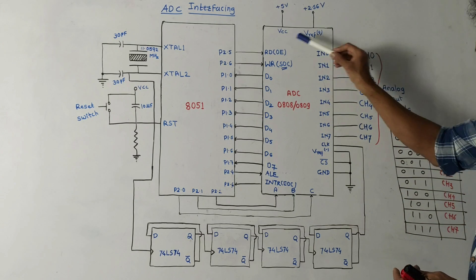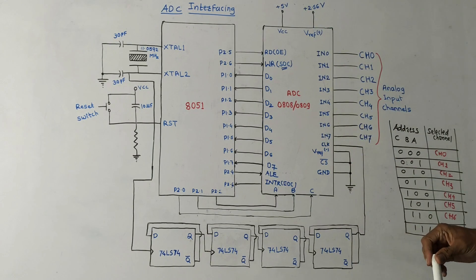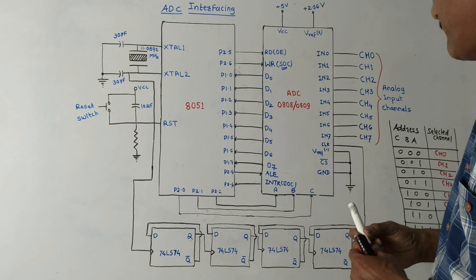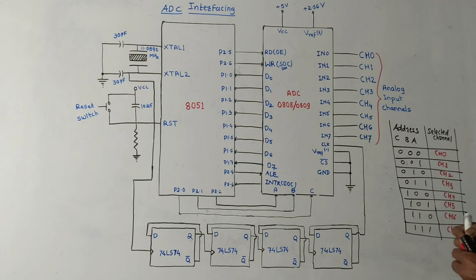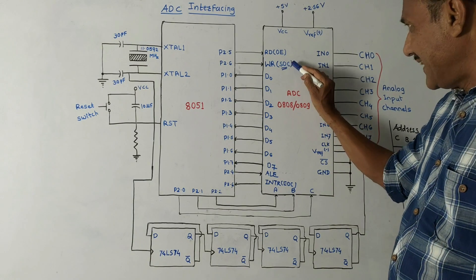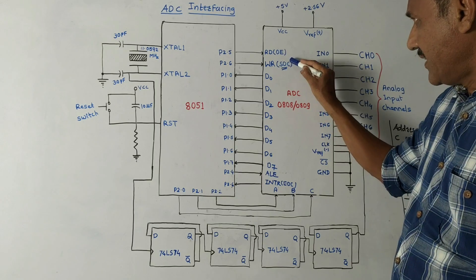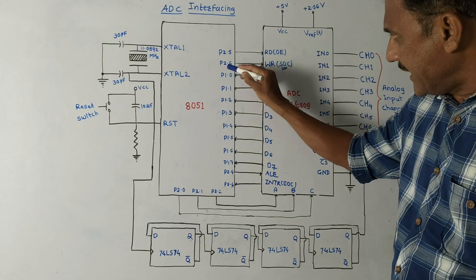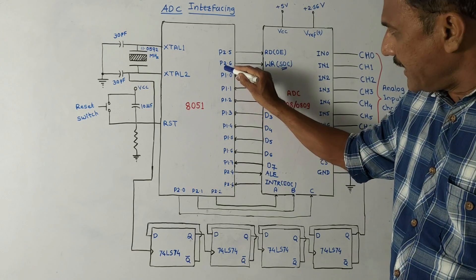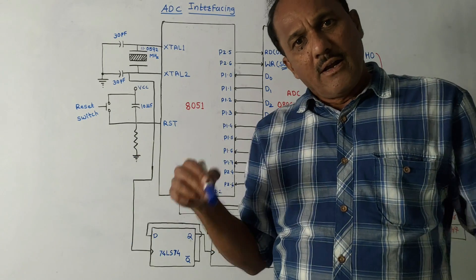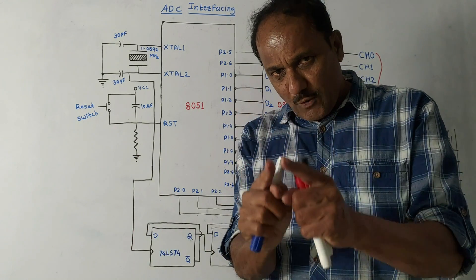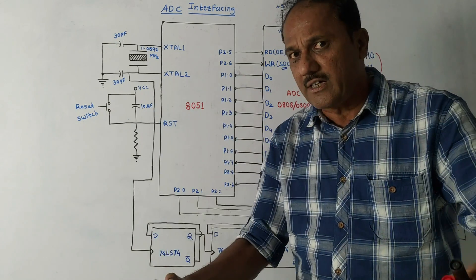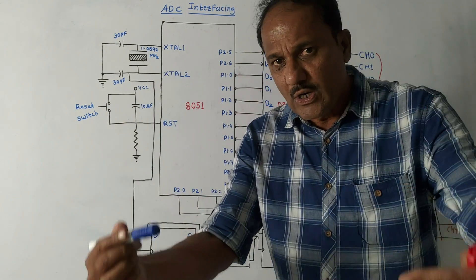I will explain the different pins and the use of each pin, which will help you write the explanation of this interfacing diagram. There are two important pins. One is SOC, that is Start of Conversion — it is also called the Write pin. It is connected to port 2, pin P2.6 of 8051. As the name indicates, when this pin is activated it will start converting the analog signal into digital.